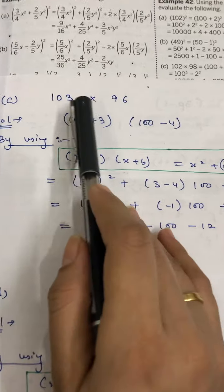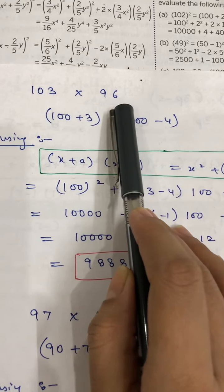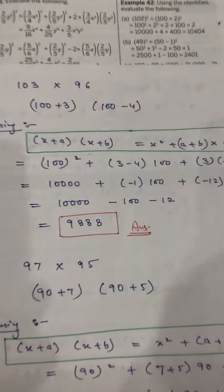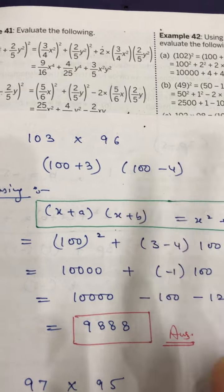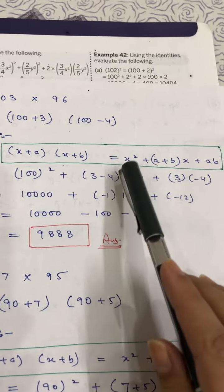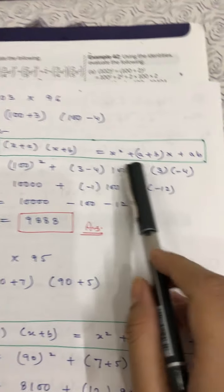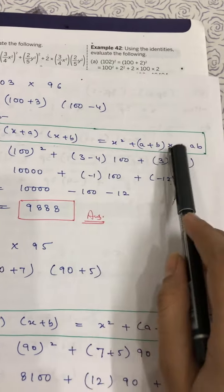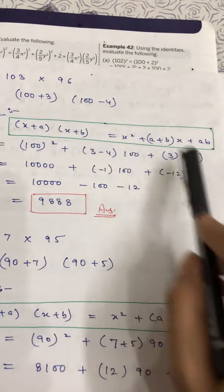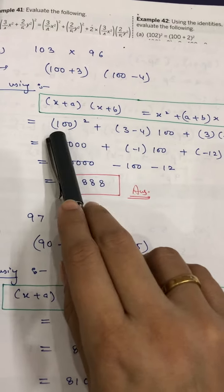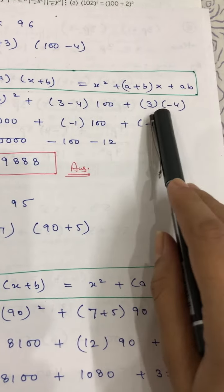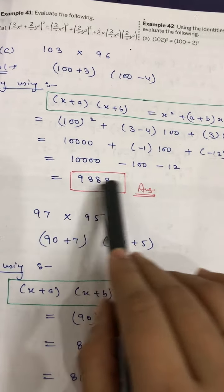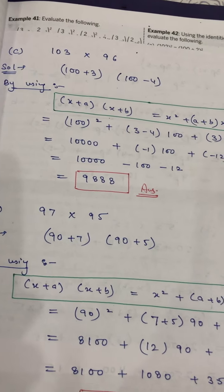For part c: 103×96. Write 103 as 100+3 and 96 as 100-4. Apply the identity with x = 100, a = 3, b = -4: 100² + (3+(-4))×100 + (3×(-4)) = 10000 + (-1)(100) + (-12) = 10000 - 100 - 12 = 9888.